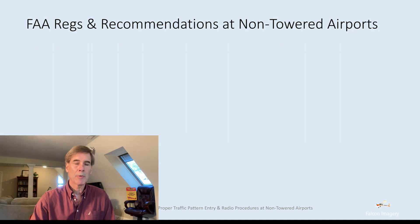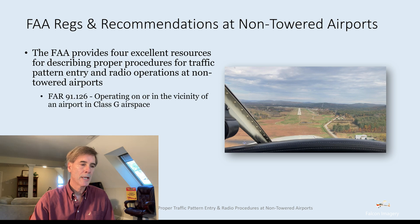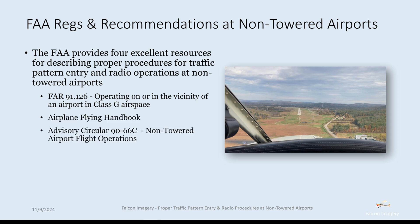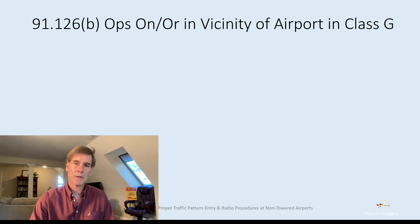The FAA regulations and recommendations at non-towered airports are quite extensive. The FAA offers at least four different good resources for describing proper traffic pattern procedure entries as well as radio communications at non-towered airports. First, FAR 91.126 operating in the vicinity of an airport in Class G airspace. The Airplane Flying Handbook. The Advisory Circular 90-66C non-towered airport flight operations. And the AIM Section 4-1-9, traffic advisory practices at airports without operating control towers.